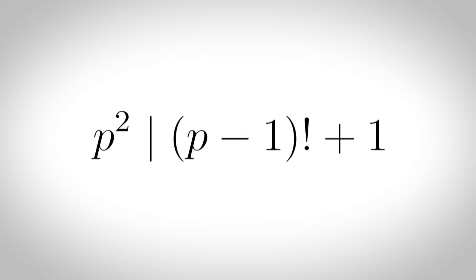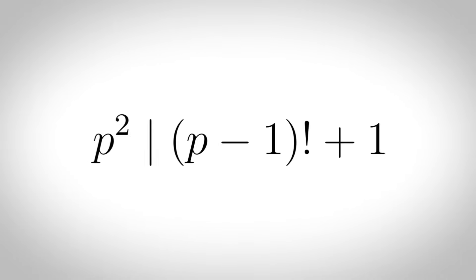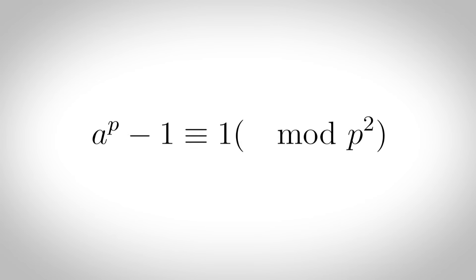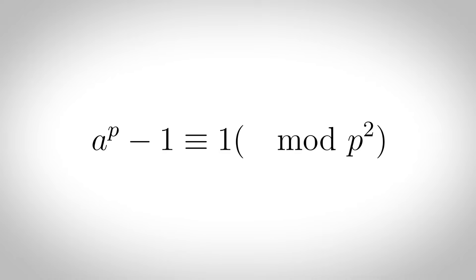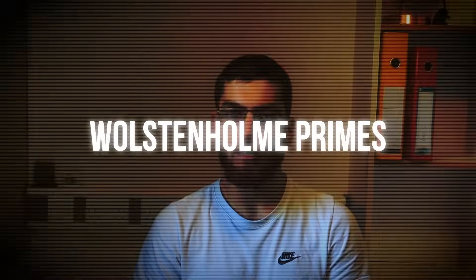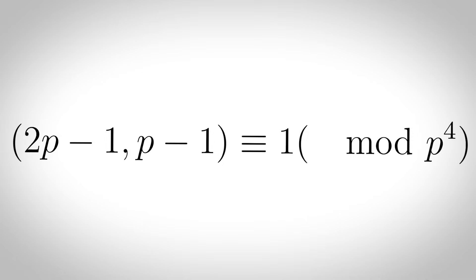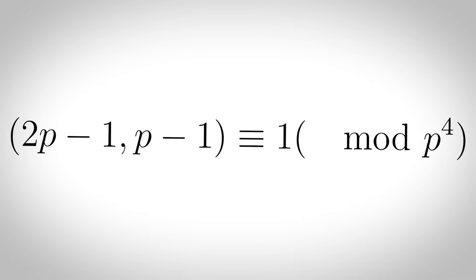Wilson primes: primes p for which p squared divides (p minus 1) factorial plus 1. Wieferich primes: primes p such that a to the p minus 1 is congruent to 1 mod p squared, for a fixed integer a greater than 1. Wolstenholme primes: primes p for which the binomial coefficient (2p minus 1) choose (p minus 1) is equal to 1 mod p to the 4.